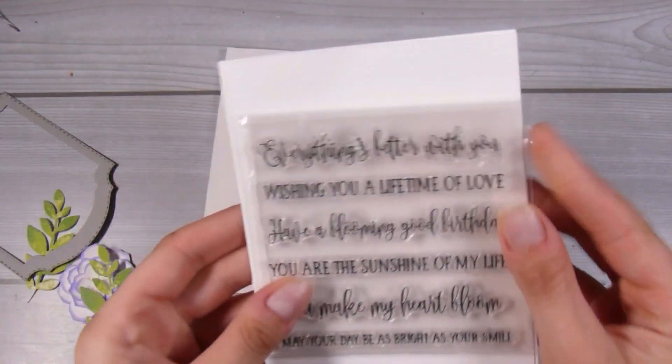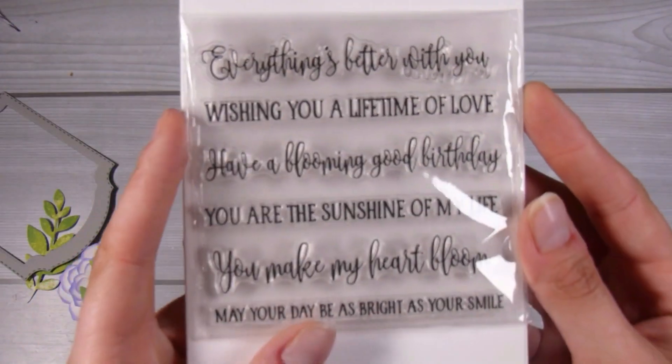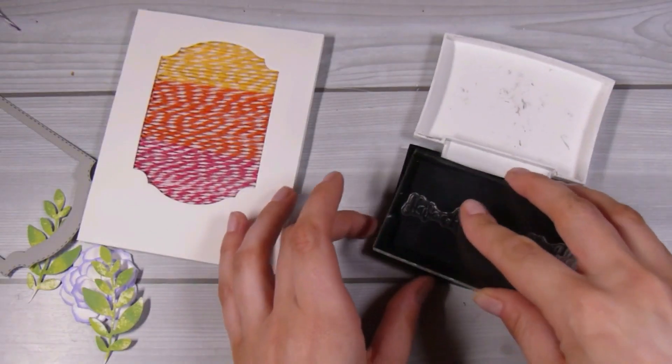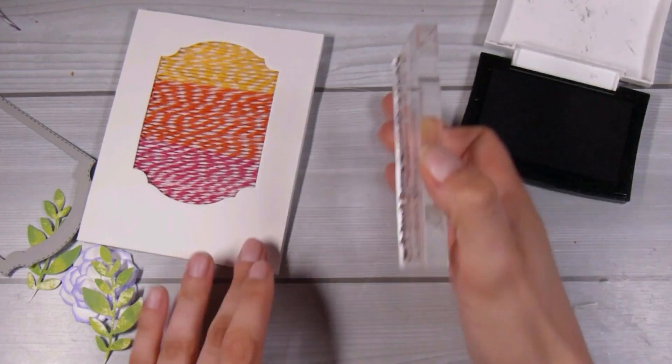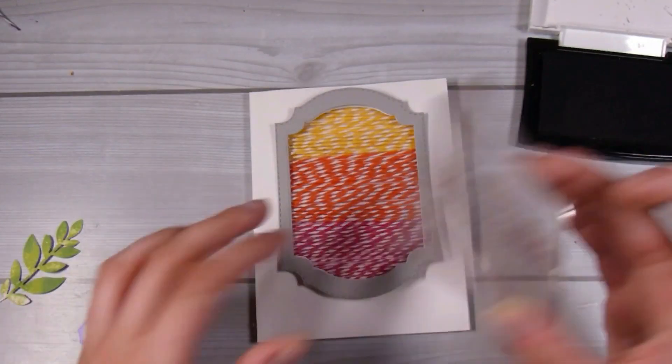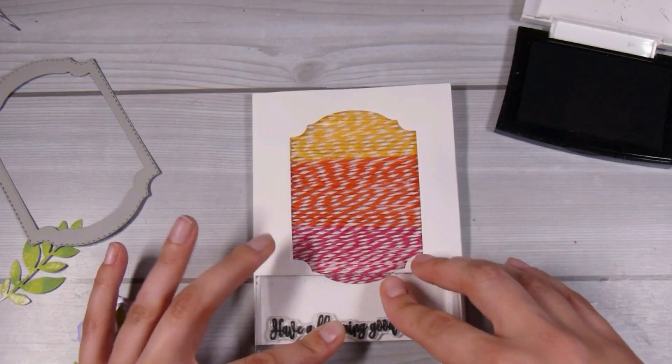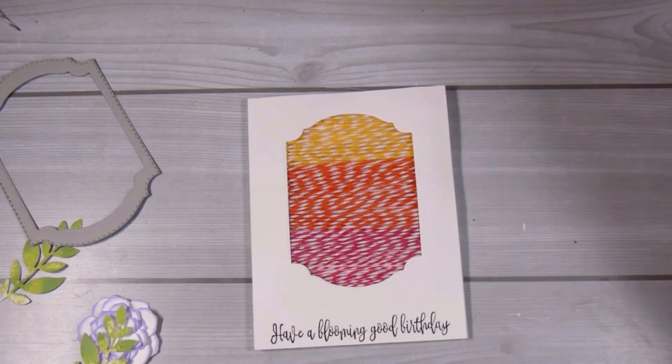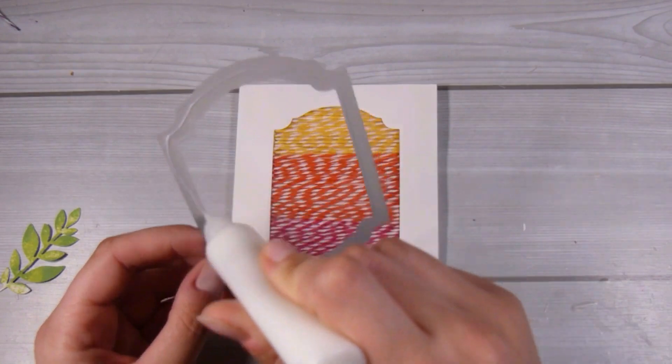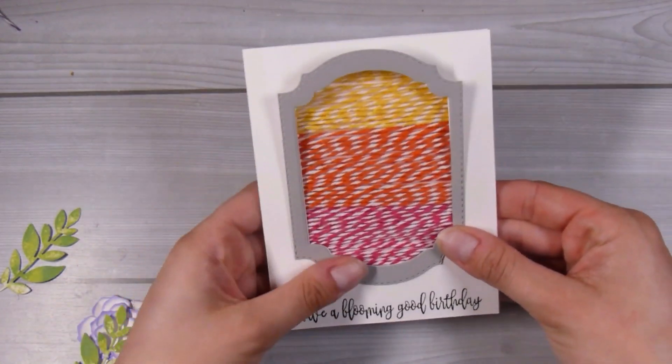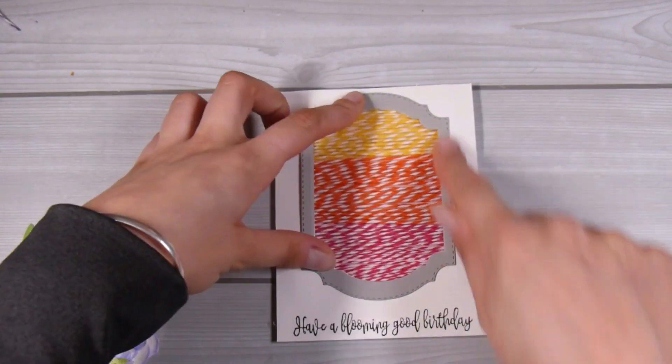It was about at this point where I realized that I don't have a sentiment on the card yet. This is kind of like a 'do as I say not as I do' - I wanted it to say 'have a blooming good birthday' because it's got that flower on there. I'm going to be a bit risky and stamp straight onto my card front. I do know that underneath here there is that solid piece of foam so I was pretty sure that I was going to get a good outcome there, but yeah, as I said, do as I say not as I do and stamp your sentiment before you start putting everything together.